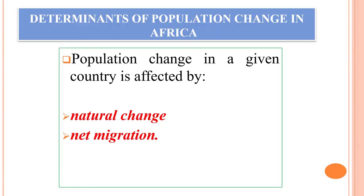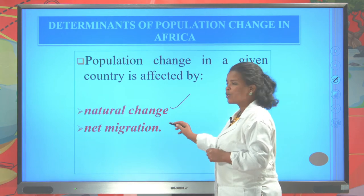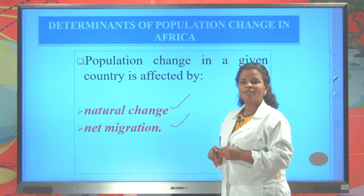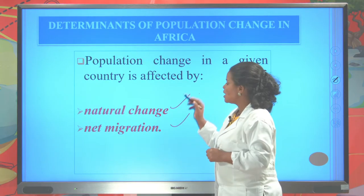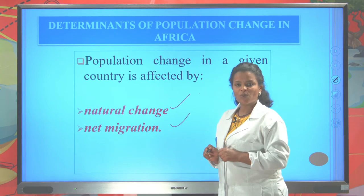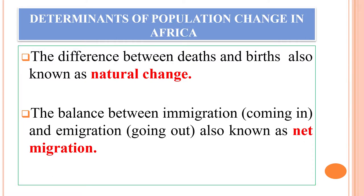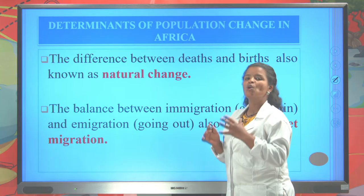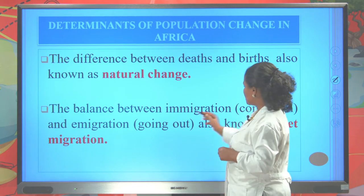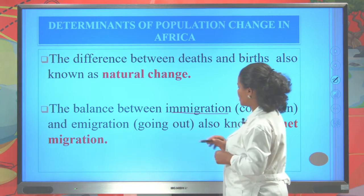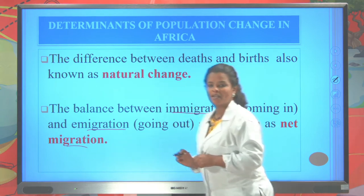Population change in a given country is affected by natural change and also net migration rate. Natural change is the difference between crude birth rate and death rate. Net migration is the result of immigration and emigration. The balance between immigration and emigration is known as net migration rate.